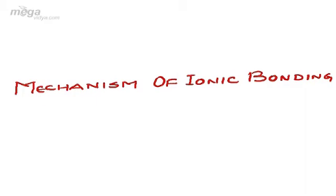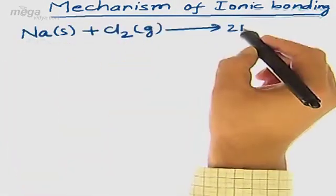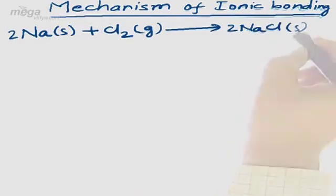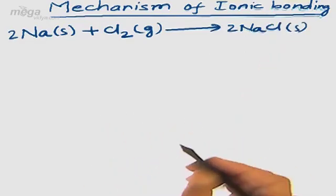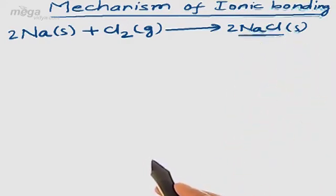In case of ionic bonding also, which is a kind of process, when two species are attached to each other through ionic bonding, a number of steps are involved during the bond formation. Hence, we are calling it a mechanism and we should observe it in different steps. Let us consider an example where we shall be dealing with ionic bond formation between two atoms — Na solid plus Cl2 gas gives 2NaCl solid. Let us check out how an ionic bond is formed between sodium and chlorine atoms.